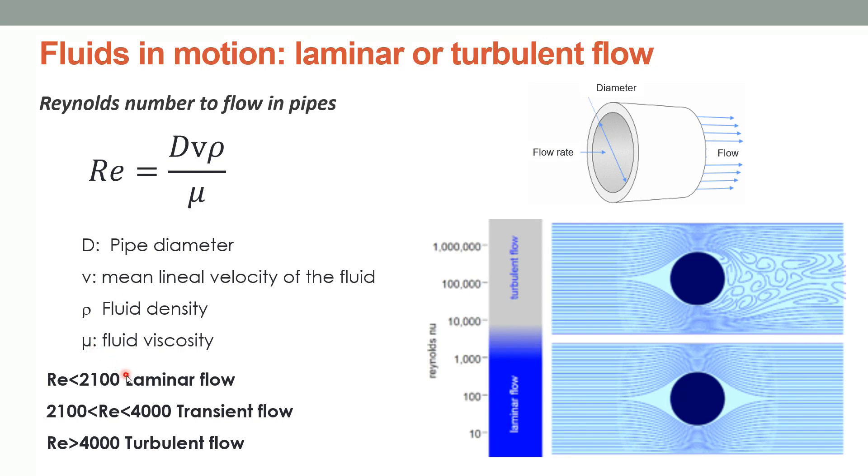Thus, a Reynolds number lower than 2,100 refers to laminar flow. A transitory regime is when the value is between 2,100 and 4,000 and the flow is turbulent when the Reynolds number is greater than 4,000.